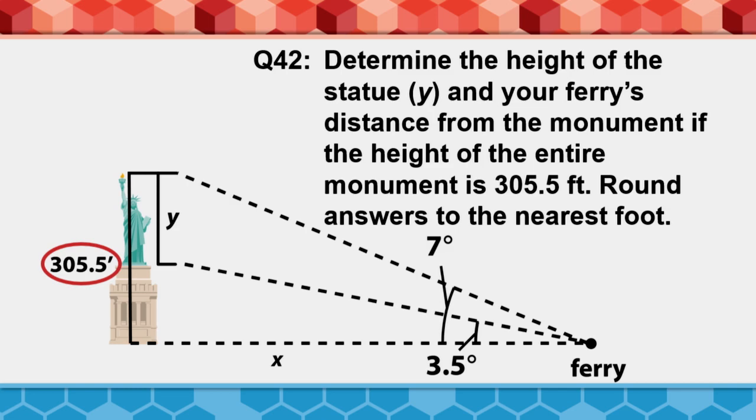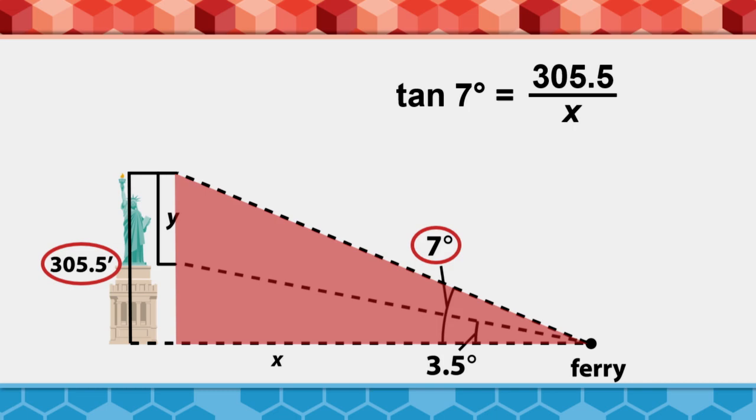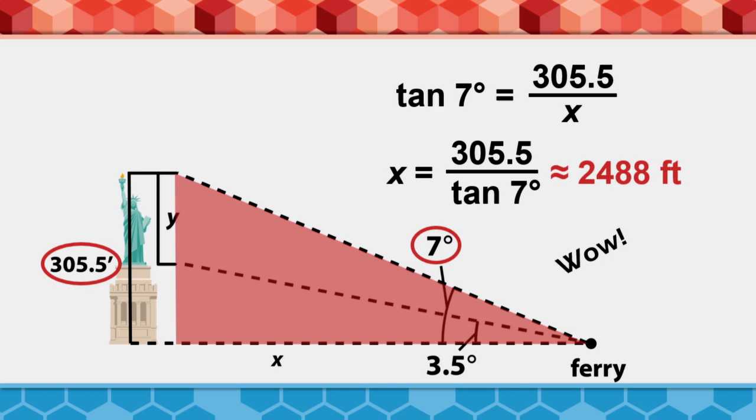It's actually easier to find the distance of the ferry to the statue first. Why? Because of these three things. We have a right triangle, we have the given angle of 7 degrees, and we know the opposite length. So we're dealing with a tangent. The tangent of 7 degrees equals 305.5 divided by x. Rearrange to solve for x, and we can figure out that the statue is about 2488 feet from our ferry.